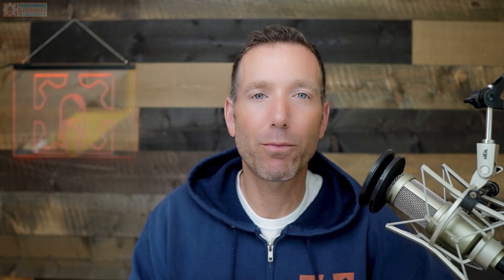There can be many different ways to implement a program that conforms to the same state diagram. Maybe you use global variables, or pointers, or switch case statements, or for loops — whatever the little details are of how it actually gets coded. That is called the implementation.